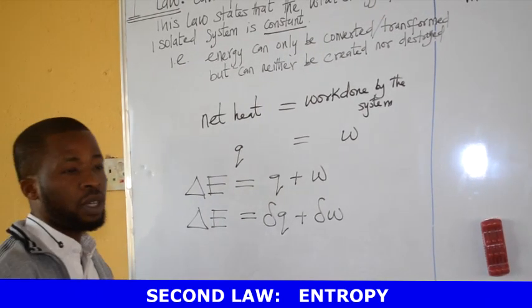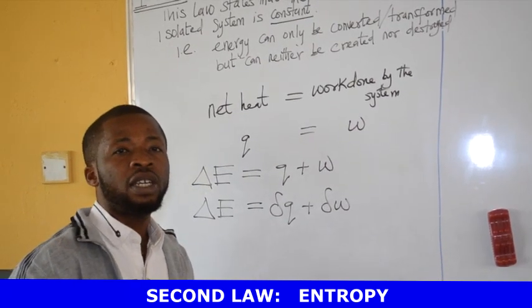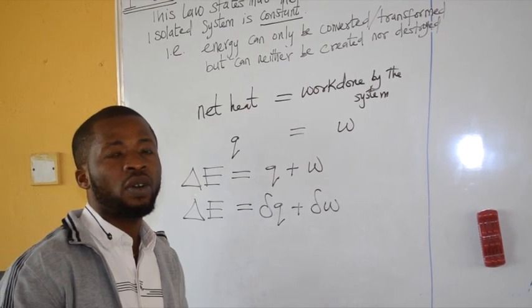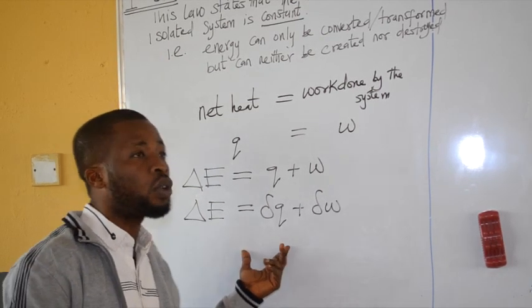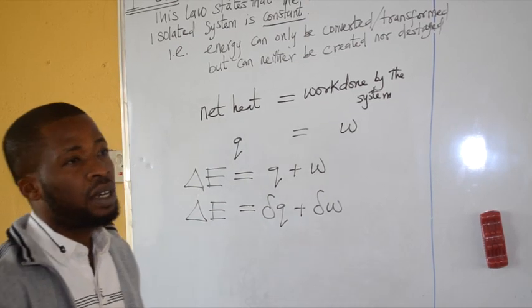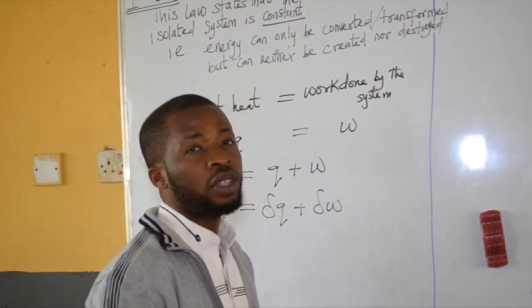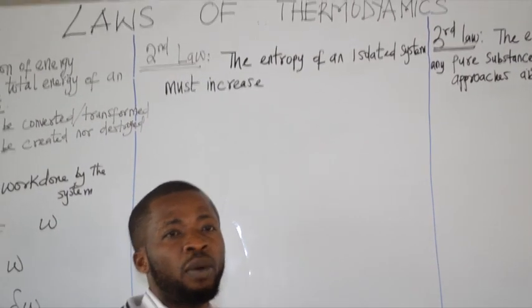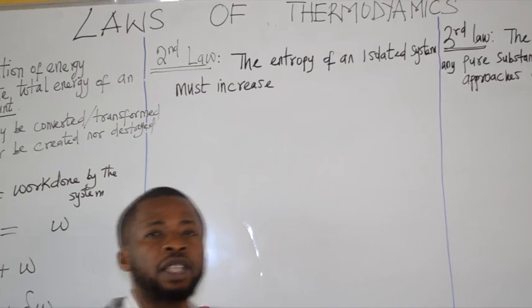The second law deals with entropy. As I said, the first, second, and third laws describe or define the physical factors that characterize a thermodynamic system. These factors or quantities include energy, which we described in the first law, the second law is entropy, and the third is temperature. The second law simply states that the entropy of an isolated system tends to increase. In other words, for any chemical or physical change to occur, the entropy of the system must increase.